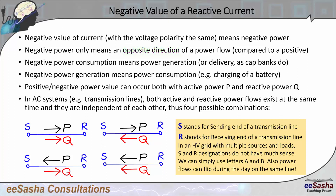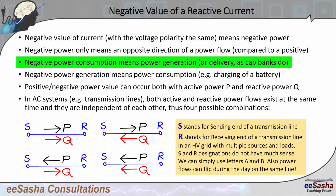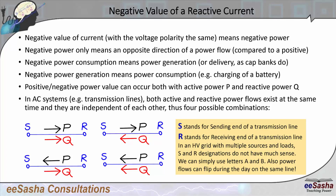Here are a couple of examples. If you have negative power consumption, that really means you have power generation. Normally for a cap bank, we say cap banks generate reactive power. However, it is the same as saying a cap bank consumes negative reactive power. Those two things are equivalent.